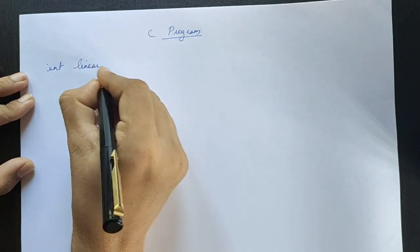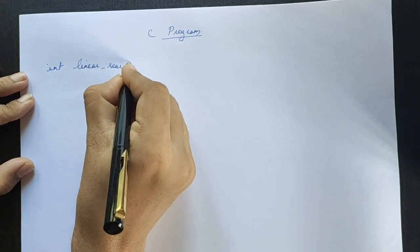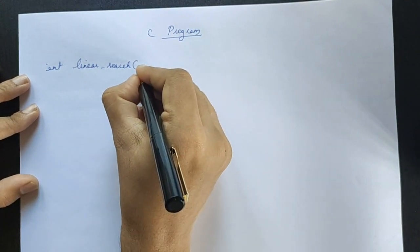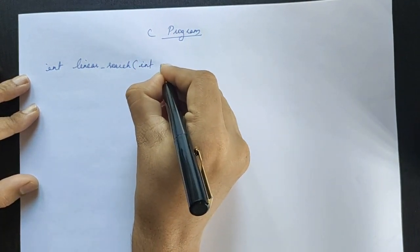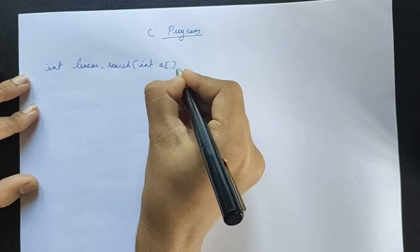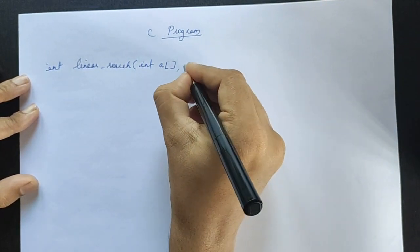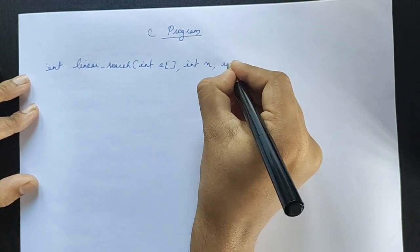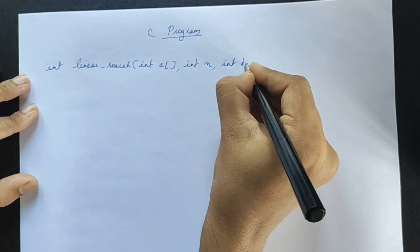The function will return the search key index. If not found, the index is minus one. The first argument is the array, the second argument is the size, and the third argument is the search key.